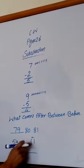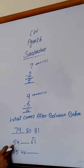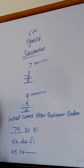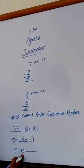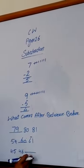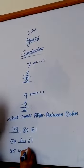What comes between 59 and 61? What number comes after 59? 60. Okay, 45 and 46. What number comes after 46? 45, 46... 47.